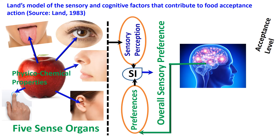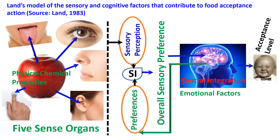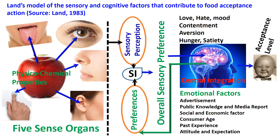Fourth, overall sensory preferences are centrally integrated with the emotional or psychological factors in the brain, and then we come up with an acceptance level. The dimensions of the emotional factors are very wide. I have included a few examples: hunger, mood, knowledge, age, gender, and past experiences. Love is an important factor — for example, in most instances we have a high preference for a meal if it is prepared by our loved one, such as a mother or wife.